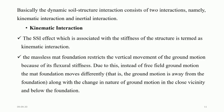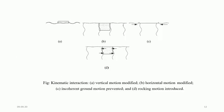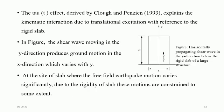The dynamic soil-structure interaction consists of two interactions: kinematic interaction and inertial interaction. Kinematic interaction is the SSI effect associated with the stiffness of the structure. The massless foundation restricts the vertical motion of the ground because of its flexural stiffness. The toe effect, derived by Clough and Penzien, explains the kinematic interaction due to translational excitation with reference to the rigid slab. The shear wave moving in the y-direction produces ground motion in the x-direction, which varies with y. At the site of the slab, where the field earthquake motion varies significantly due to the rigidity of the slab, these motions are constrained to some extent.